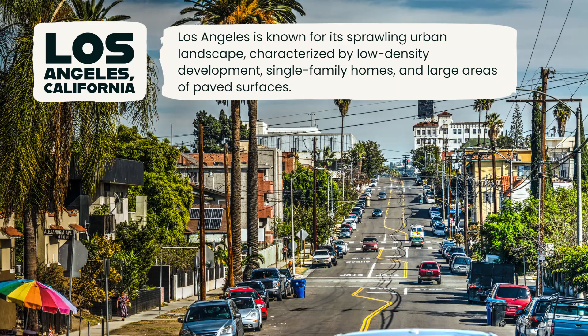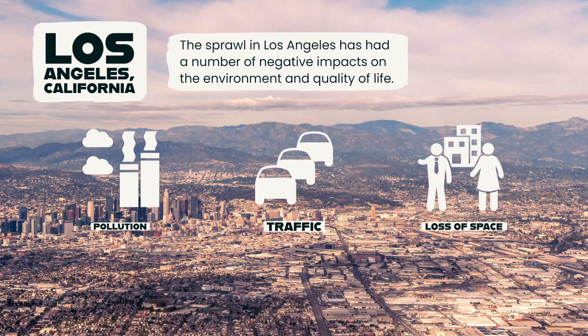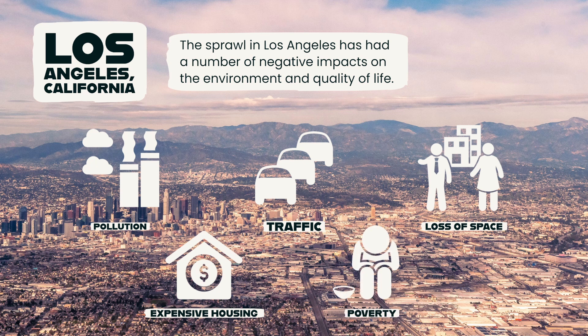One city that is a great example of urbanization and sprawl is Los Angeles, California. Los Angeles is known for its sprawling urban landscape, characterized by low-density development, single-family homes, and large areas of paved surfaces. The city has experienced rapid population growth and urbanization over the past century, and it continues to spread outwards in all directions. The sprawl in Los Angeles has had a number of negative impacts on the environment and quality of life, such as air pollution, traffic congestion, and loss of open space. It has also led to a lack of affordable housing and increased poverty in some areas. Despite its negative impacts, Los Angeles continues to be a popular destination for people looking for work and opportunity, and it remains one of the most important economic and cultural centers in the world.